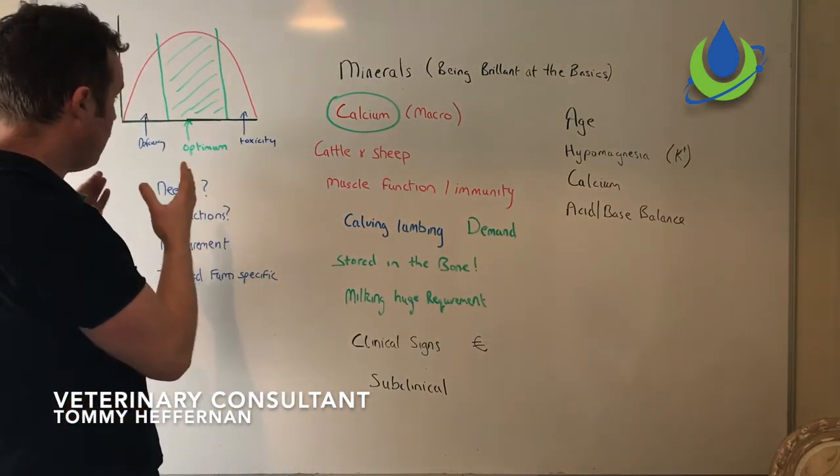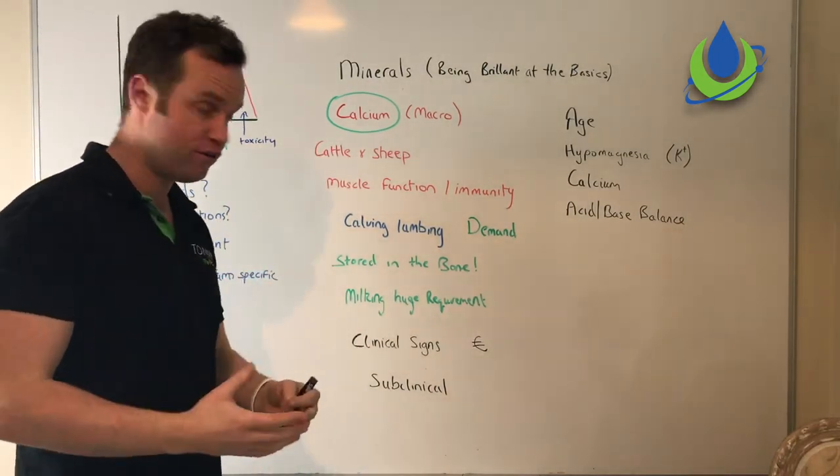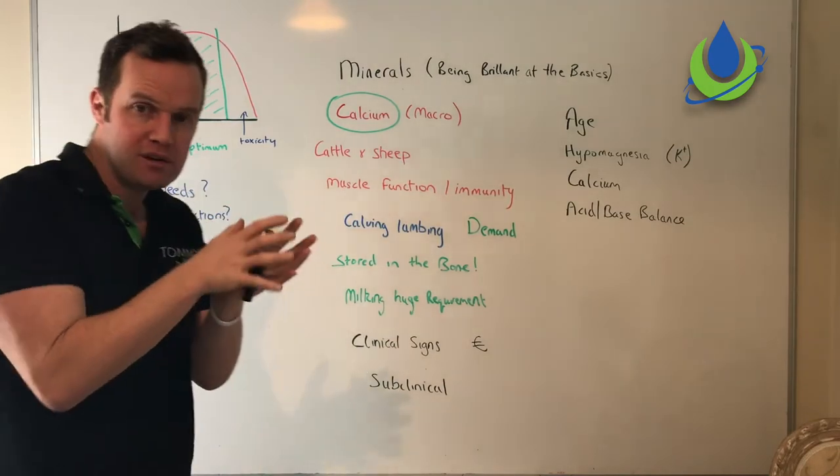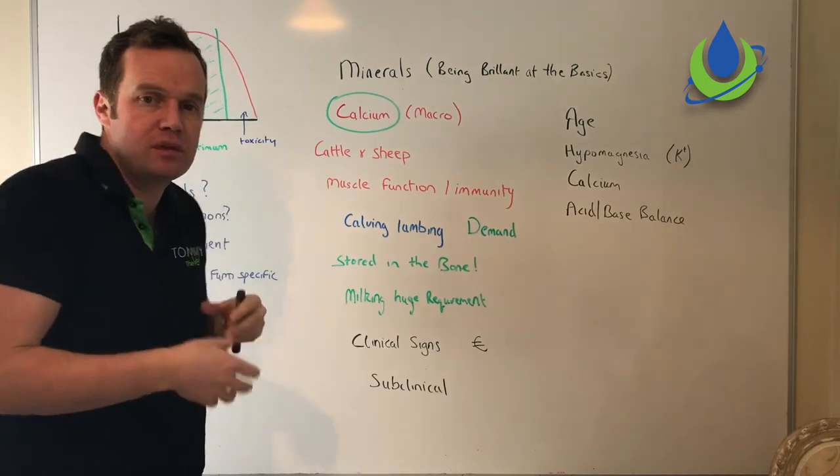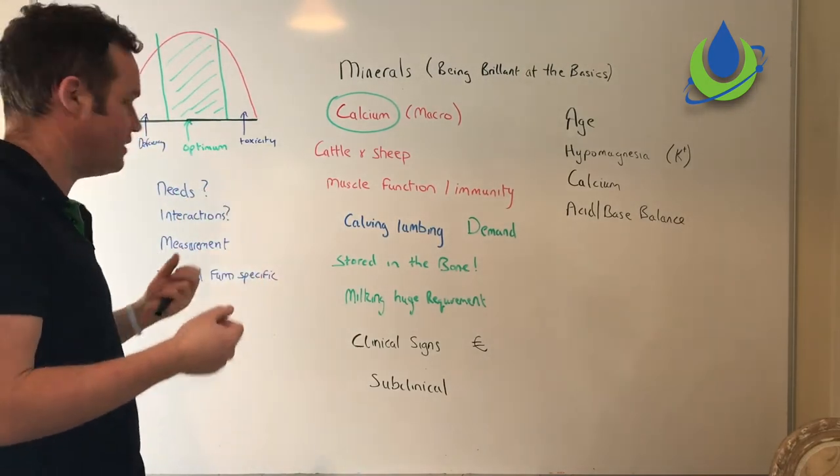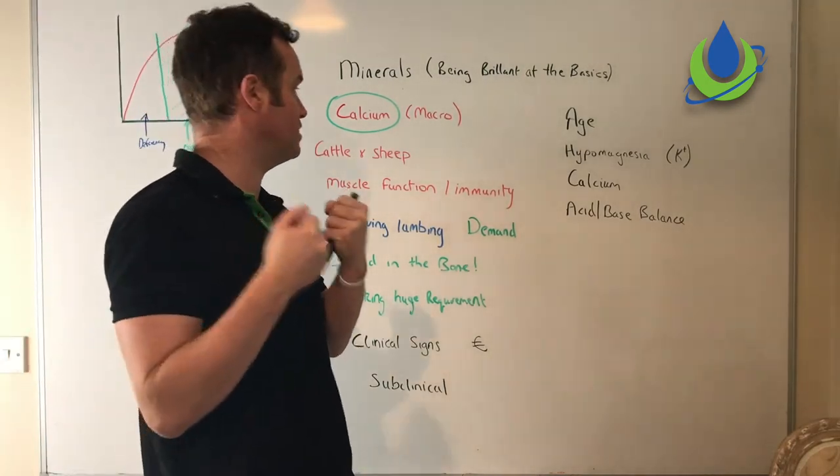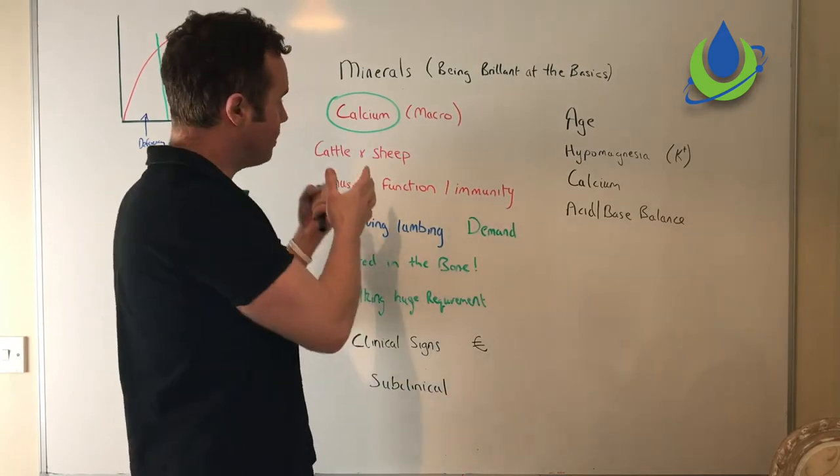So what does the animal need? What does your herd or flock need? Remember, minerals are complex and they have interactions with each other. Measurement of what we're putting into the diet - we need to supplement, and it can be very farm specific. Cattle and sheep - calcium plays a key role.